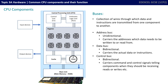Finally we have the buses. These are collections of wires through which data and instructions are transmitted from one component to another. There are three main types of bus and we look at these in more detail in a later video. There's the address bus, which is known as unidirectional — it goes in one direction — and this carries the addresses which data needs to be written to or read from, and these leave the CPU.